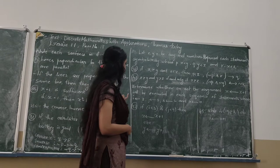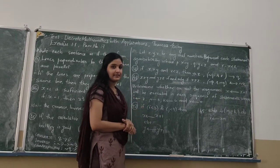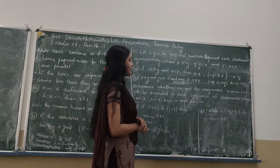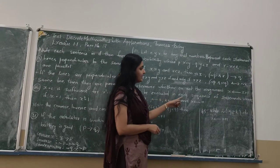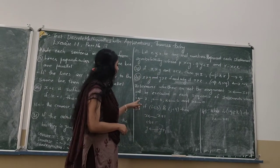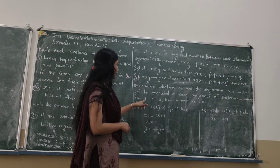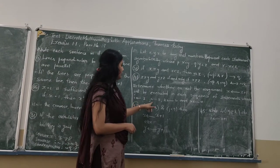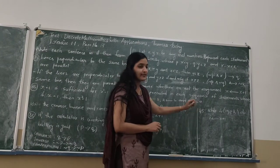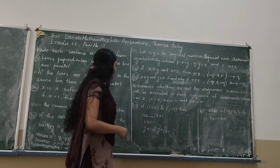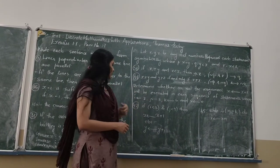The next question is: determine whether or not the assignment X goes to X plus 1 will be executed in each sequence of statements, where I is assigned 2, J is assigned 3, K is assigned 6, and X is assigned 4.